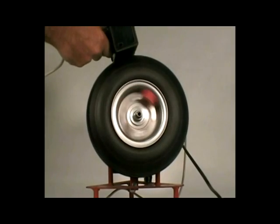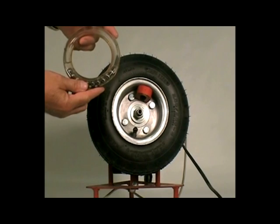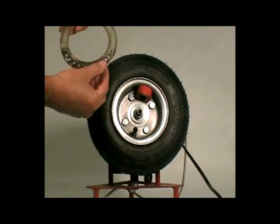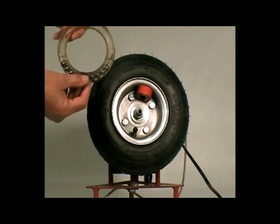We'll stop it again. I'm going to put a balancer on this assembly. You can notice this particular balancer is built with steel ball bearings and we use a clear dampening fluid. This is for demonstration purposes.